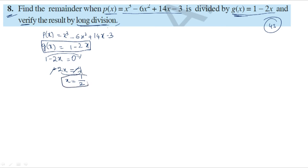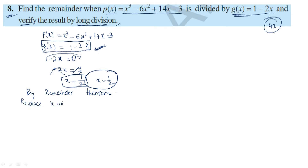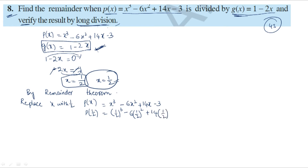By remainder theorem, we replace x with 1 by 2 in P of x. So P of 1 by 2 equals 1 by 2 whole cube minus 6 of 1 by 2 whole square plus 14 of 1 by 2 minus 3.